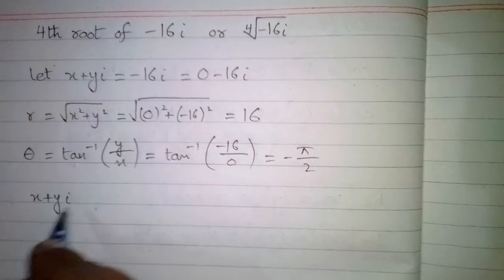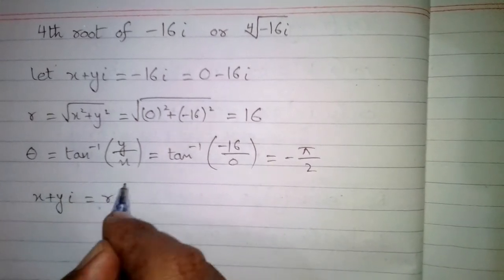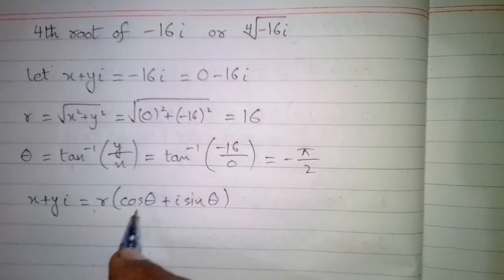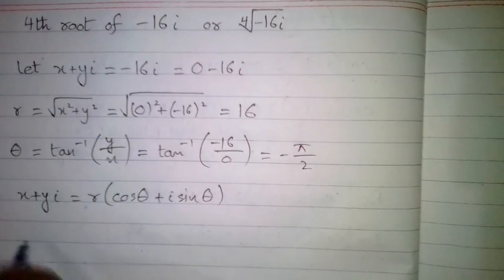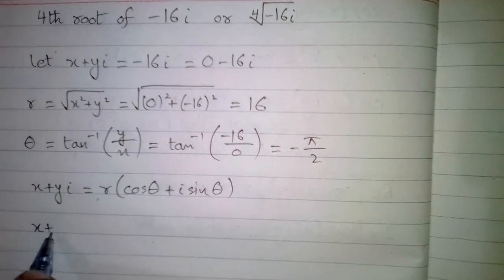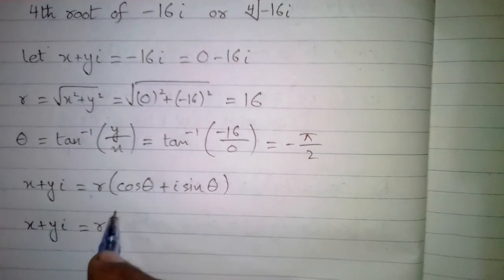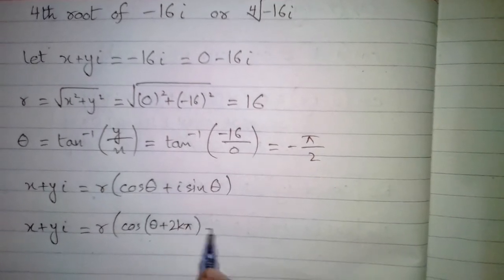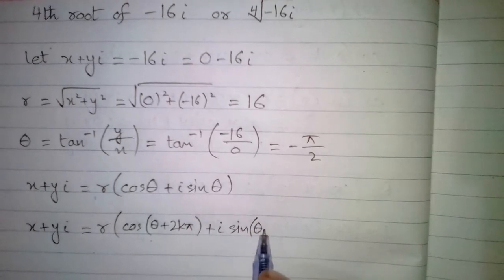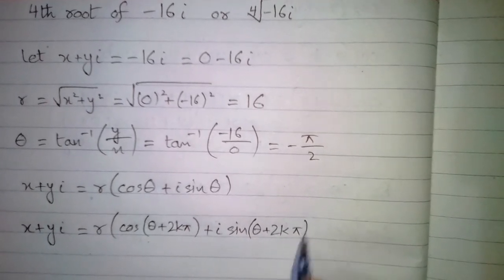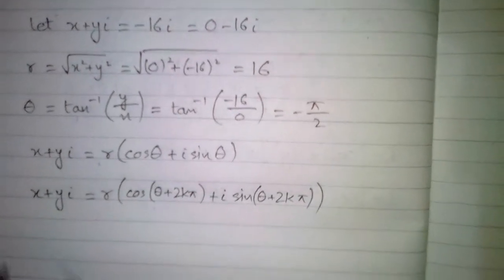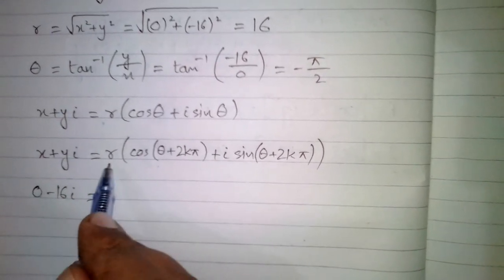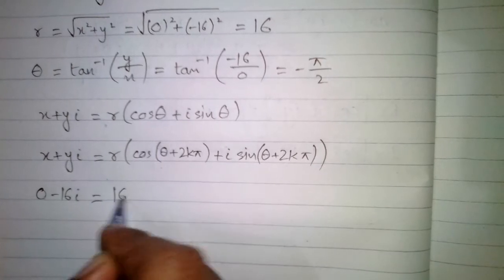We can express any complex number x plus y·iota in polar form as r times (cos θ + i·sin θ). Since cosine and sine are periodic with period 2kπ, we write x plus y·iota as r times (cos(θ + 2kπ) + i·sin(θ + 2kπ)). For 0 minus 16 iota, we have r equal to 16 and theta equal to minus pi by 2.